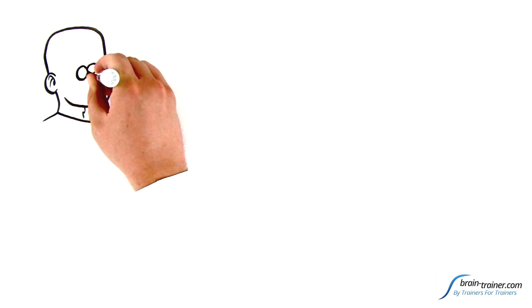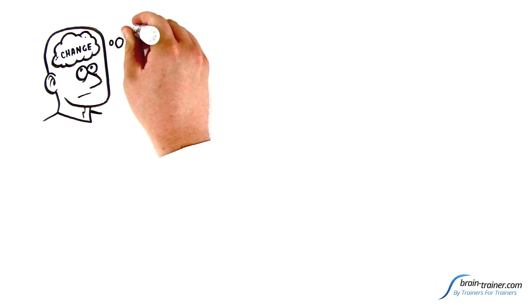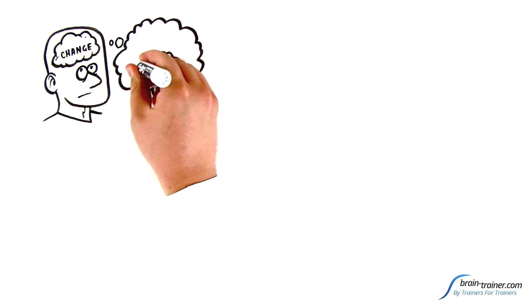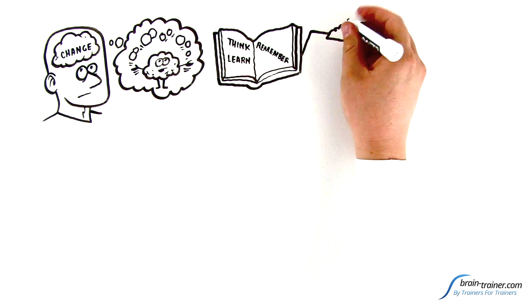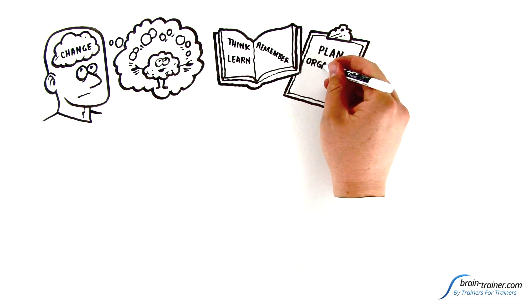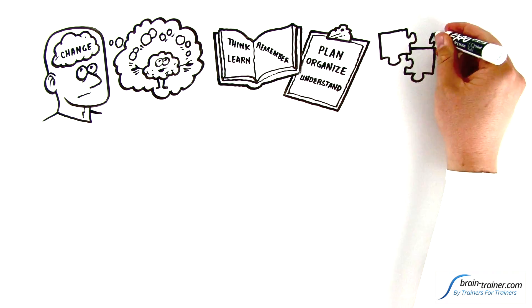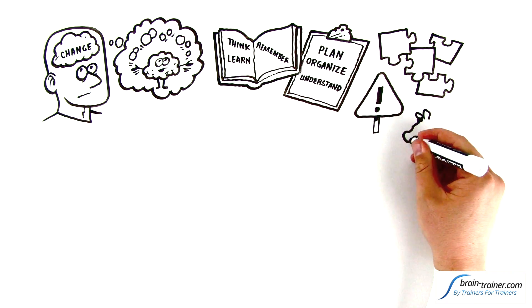What if you actually could change your own brain? Think about the things your brain controls in your life: how you think and learn and remember, how you plan and organize and understand things, how you pay attention and solve problems, your motivation.